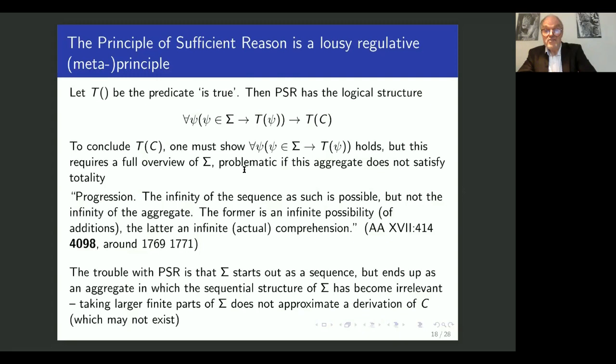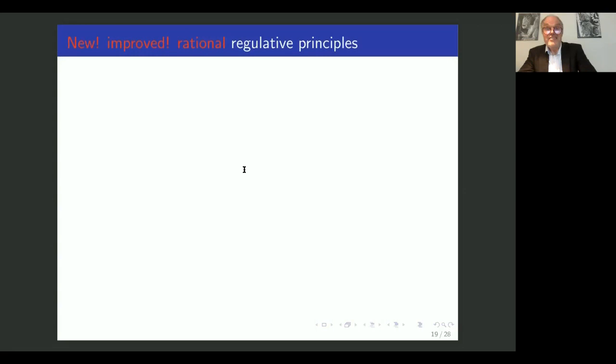Right, so why would Kant endorse this principle? Well, as he does in the Vienna logic and the Jäsche logic. I claim that he tried to salvage this principle in the paragraph that he added to the B edition of the transcendental deduction in paragraph 12, B114 to B116, which allow him to introduce what I call rational regulative principles.